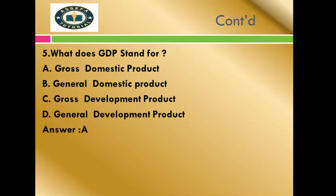Question number five: What does GDP stand for? The options are: A) Gross domestic product, B) General domestic product, C) Gross development product, D) General development product. The correct answer for question number five is A, gross domestic product.